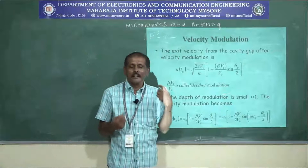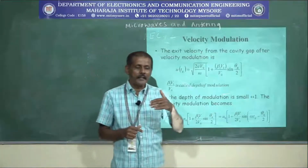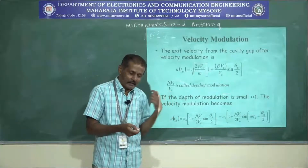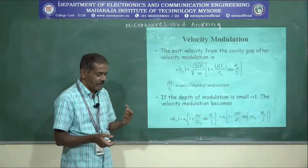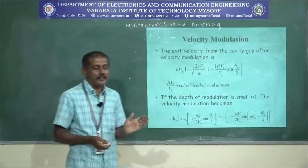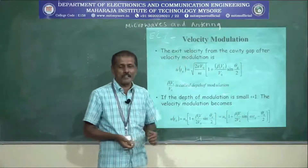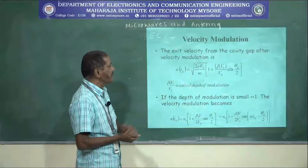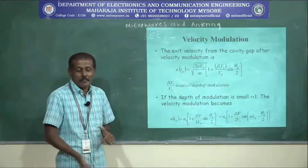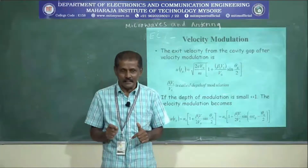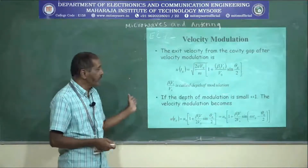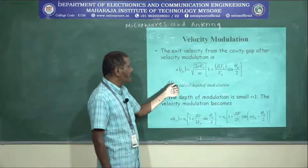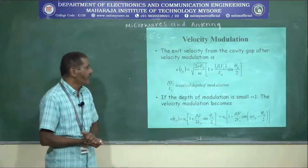The exit velocity of electrons from the cavity gap after velocity modulation can be calculated from the relevant equations. The term β1V1/V0 in this equation is called the depth of modulation. If the depth of modulation is less than 1, then the velocity modulation becomes small and we use one equation to calculate velocity; if the depth of modulation is greater than 1, we use a different equation. These are the equations to remember for calculating electron velocity depending on the depth of modulation.